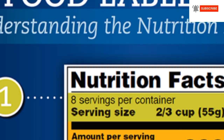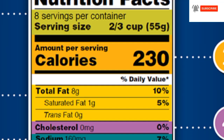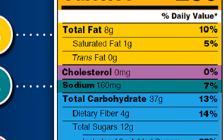Now let's break down the parts of a nutrition label. First, take a look at the number of servings in the package and the serving size. Second, calories provide a measure of how much energy you get from a serving — in this label, there are 230 calories in one serving. The amount of servings you consume determines the number of calories you actually eat. Percentage daily value is the amount each nutrient contributes to a diet based on a 2,000 calorie diet.